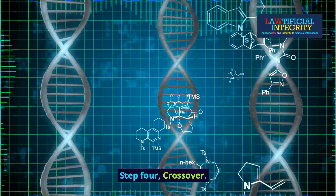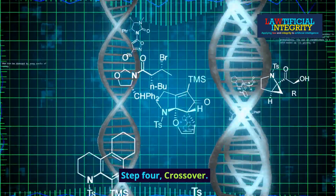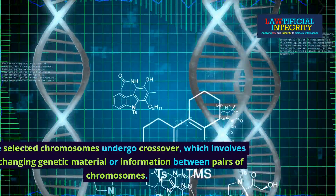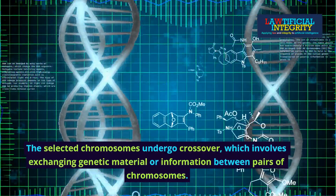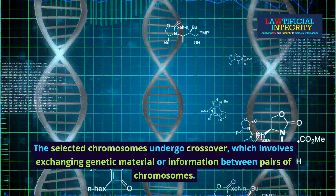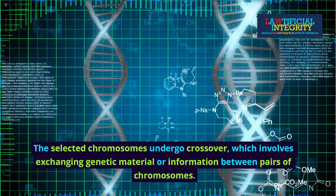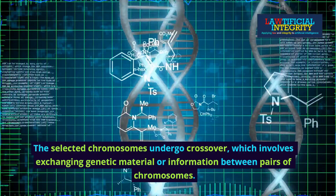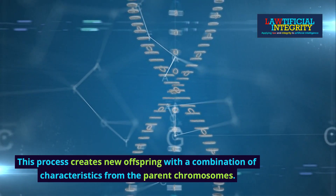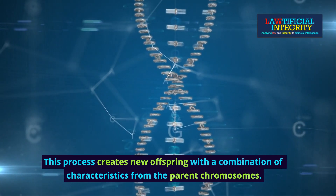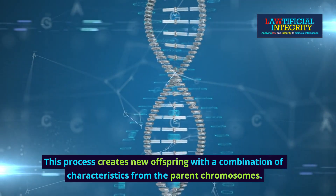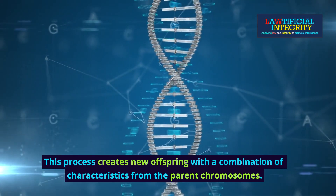Step 4: Crossover. The selected chromosomes undergo crossover, which involves exchanging genetic material or information between pairs of chromosomes. This process creates new offspring with a combination of characteristics from the parent chromosomes.